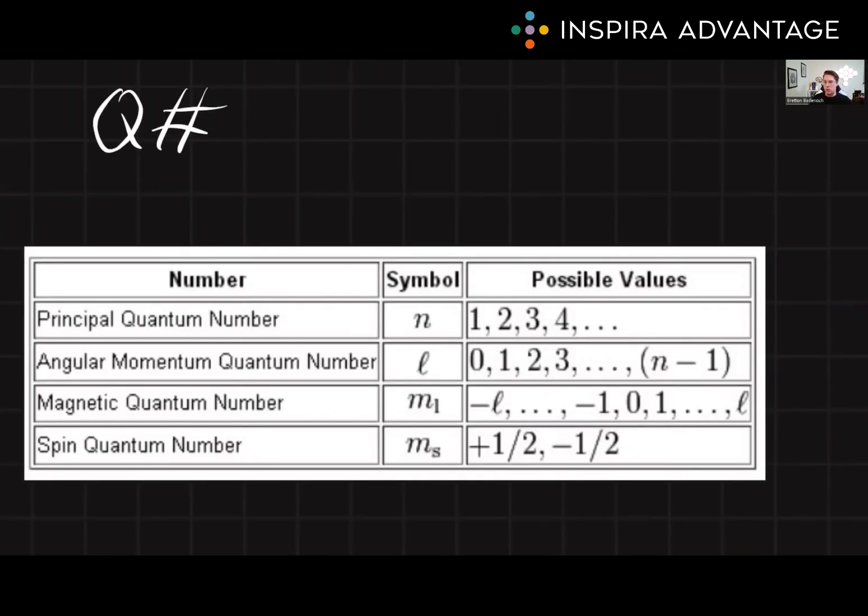Let's take a look at the quantum numbers. They sound a lot scarier than they are. Beginning with the principal quantum number, which we symbolize with n. This determines the energy level and size of the orbital. It has to be a positive integer starting at the number one. So it could be one, two, three, four. It could not be negative. It could not be zero.